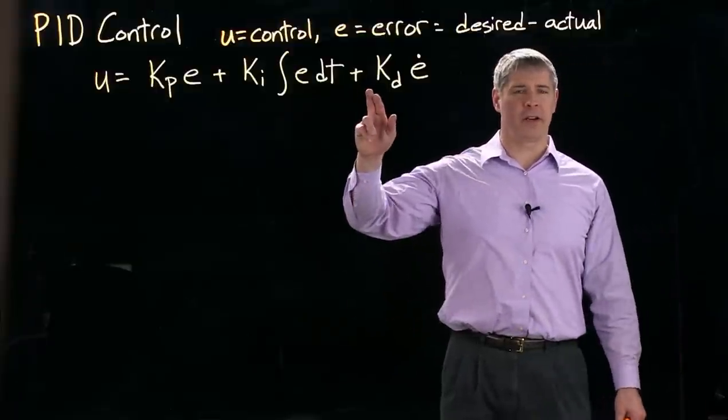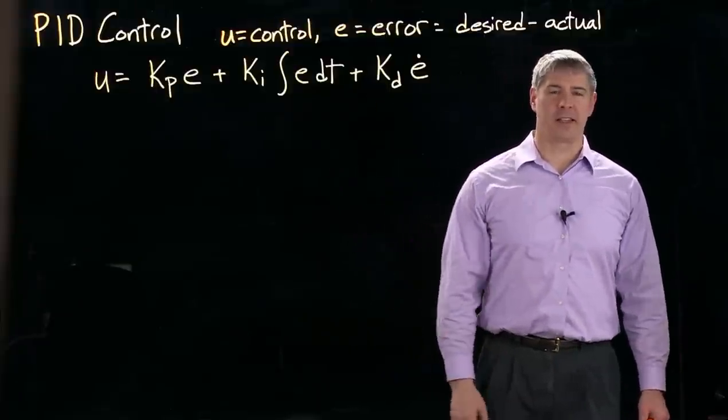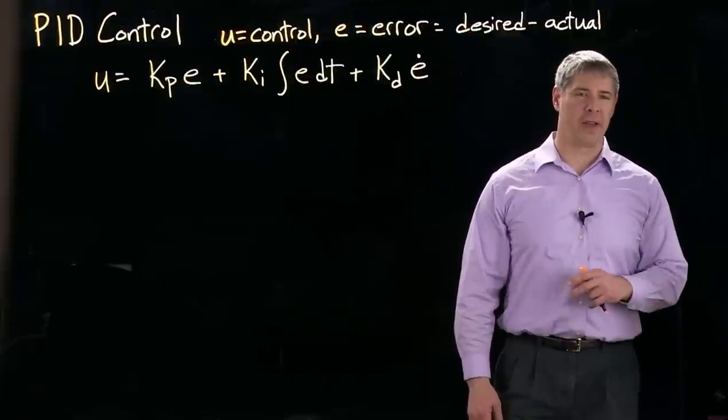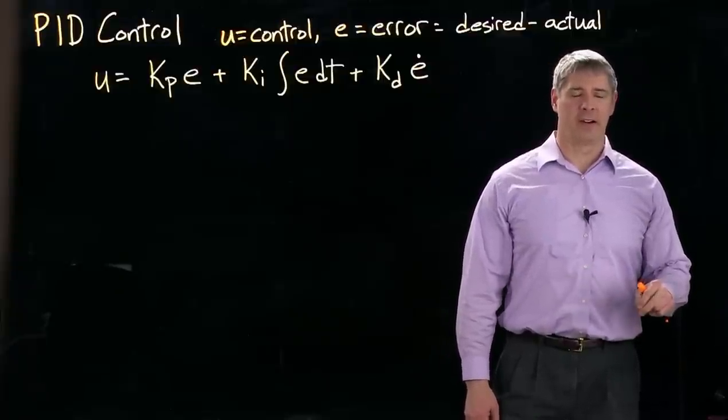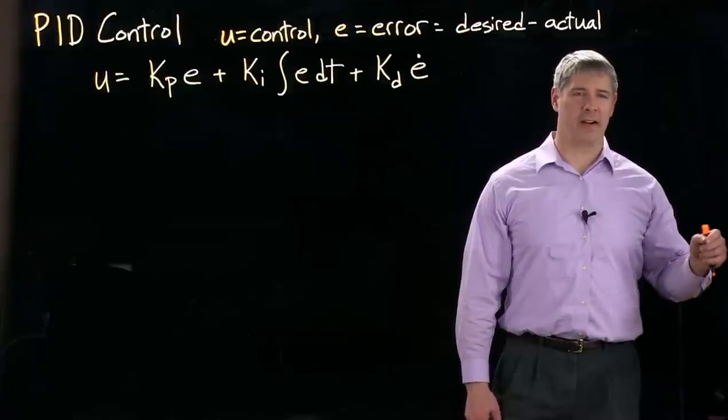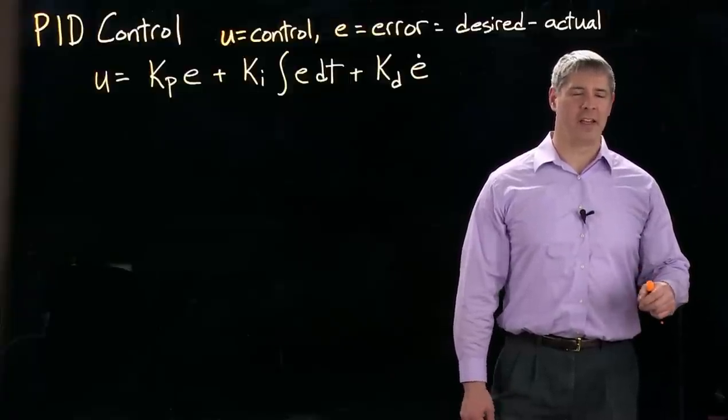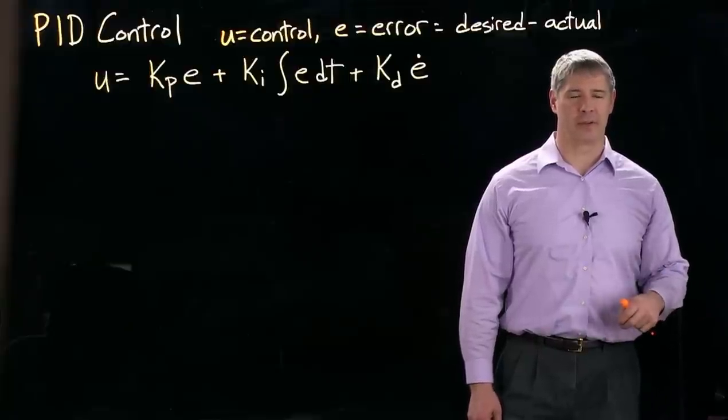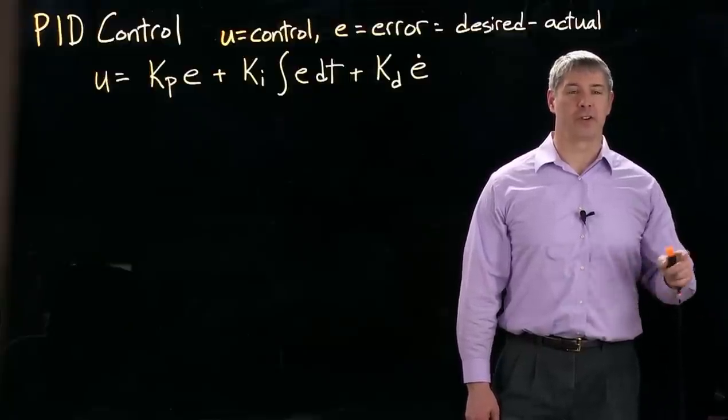This term here, Kd acts like a damper. So if the error is increasing, then it tries to create a force to make that rate of error decrease. And if the error is decreasing, then it's going to act to slow down the rate of decrease. So we get to error equals zero without overshooting.